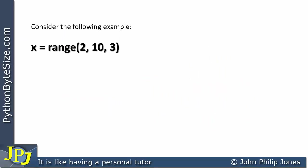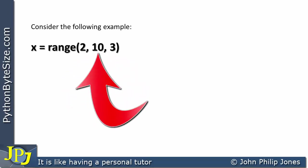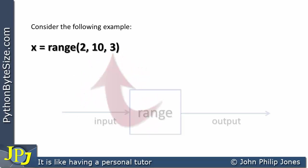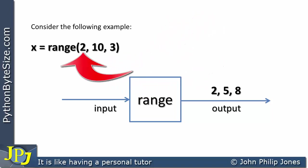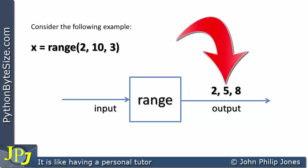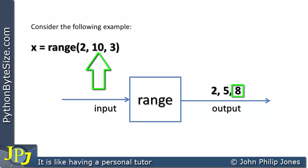Here is another example where I'm now starting at 2, the stop is still 10, but the step has changed to 3. Passing in 2, 10, and 3 as arguments, the output produced is 2, 5, and 8. The starting value is 2; stepping up by 3 gives 5, then 8. When at 8, stepping up by 3 would give 11, but 11 is beyond the stop value of 10, so we stop at 8. This result is bound to variable x.